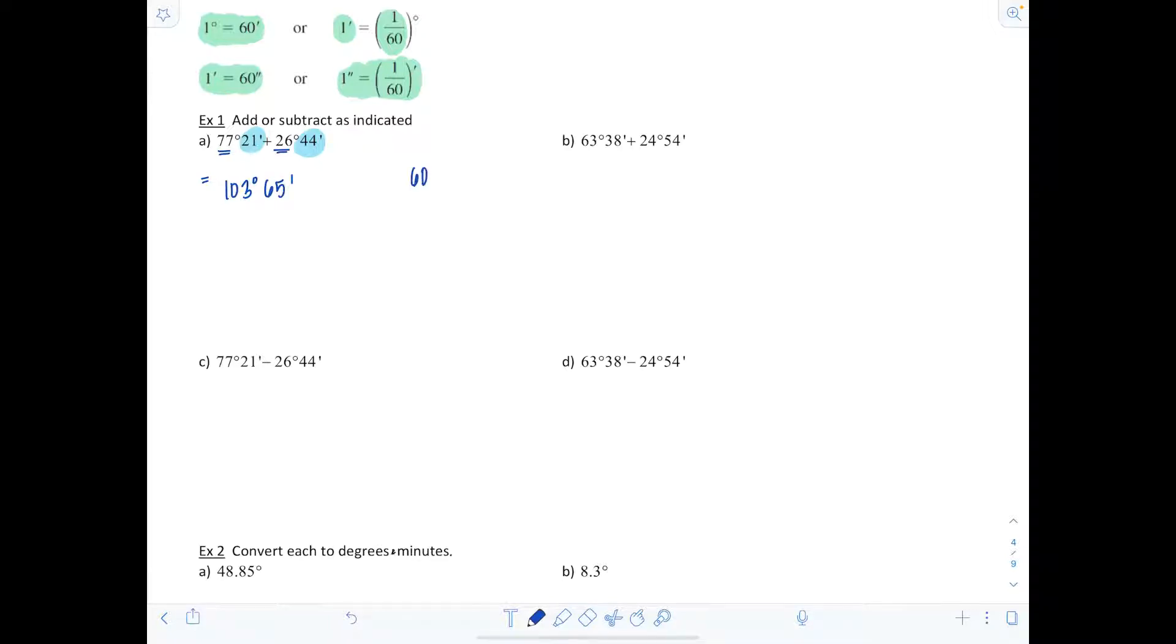Remember 60 minutes is equal to one degree. That means I don't want to leave the minutes in this angle larger than 60. I need to take 60 of them away since they're equal to one degree, and now make this 104 degrees and only five minutes.